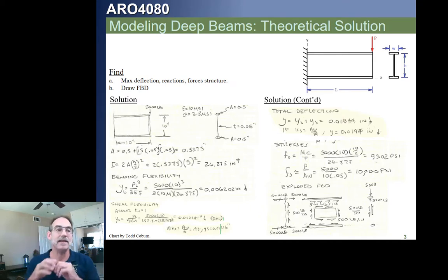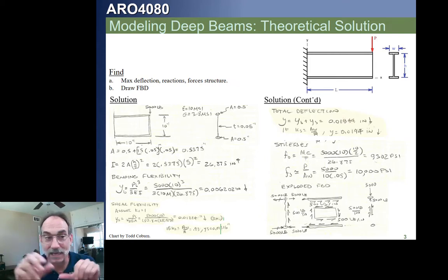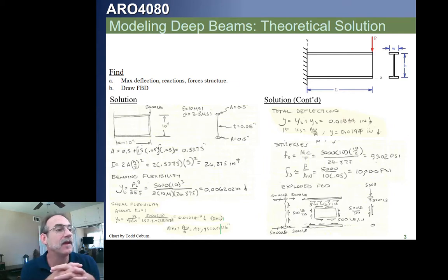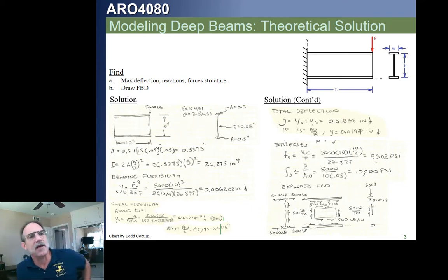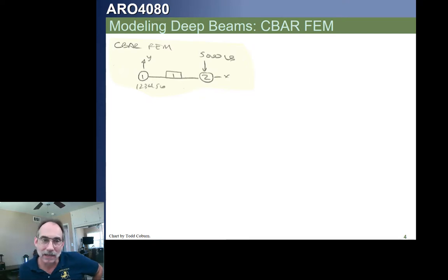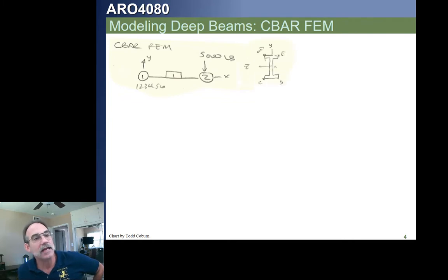So this is a pre-standard solution. Normally we'd be ignoring the shear deflection part, which would mean a completely wrong deflection for this deep beam case. Our forces are calculated with this simple lumped area number, and our exploded free body diagram would look like this. Now let's go ahead and try to model this beam. Let's start by just modeling it with a single bar element — the C-bar element — going from node 1, where it's fixed, to node 2.